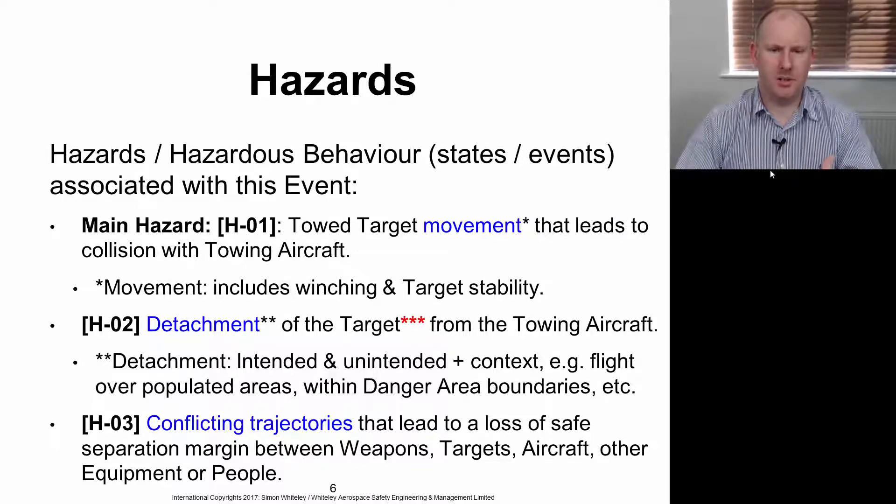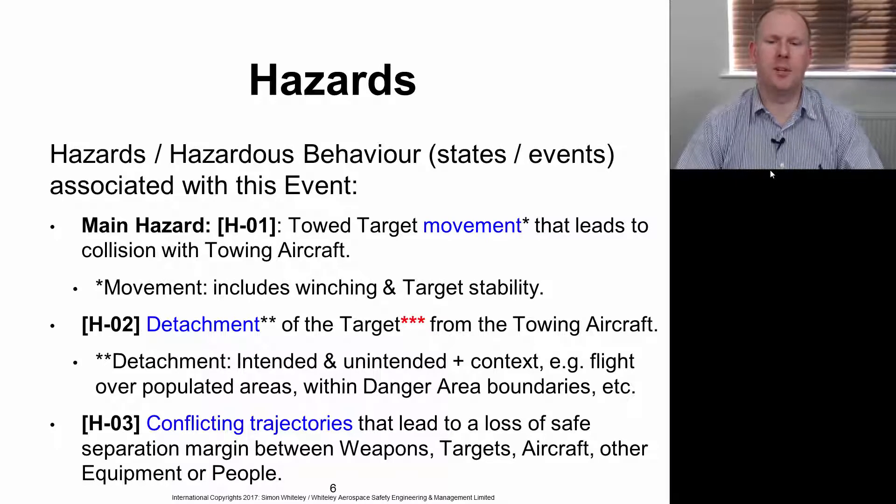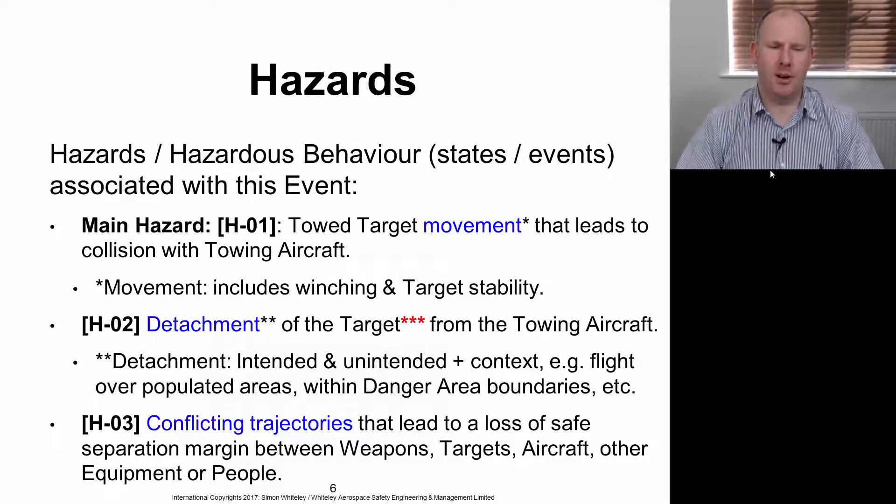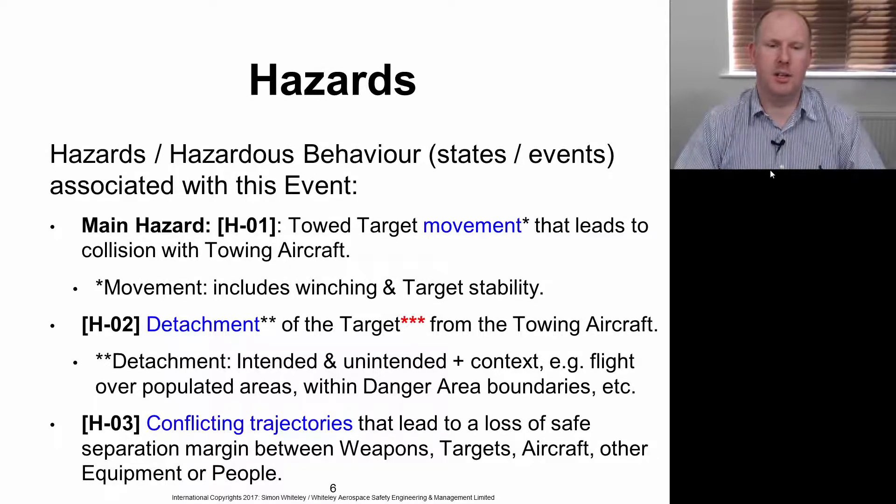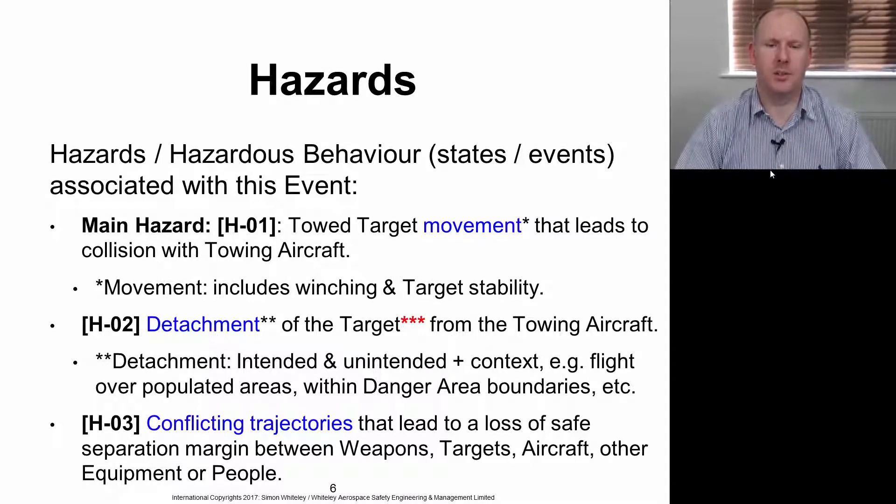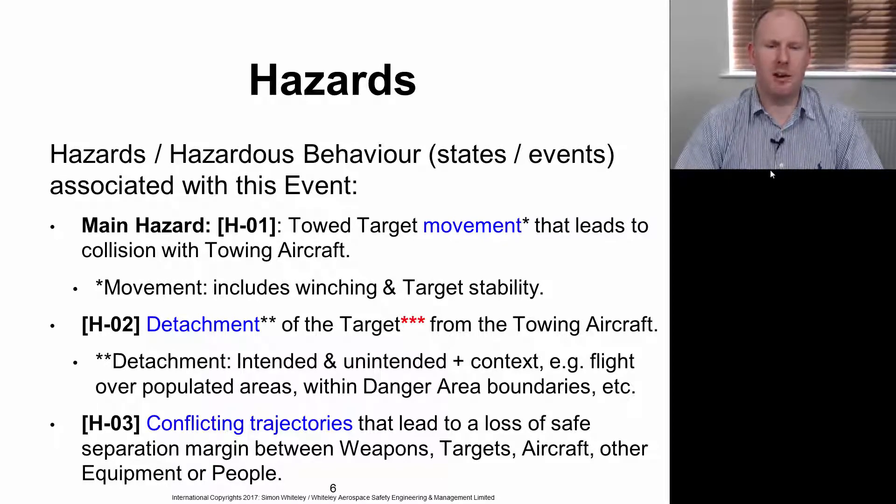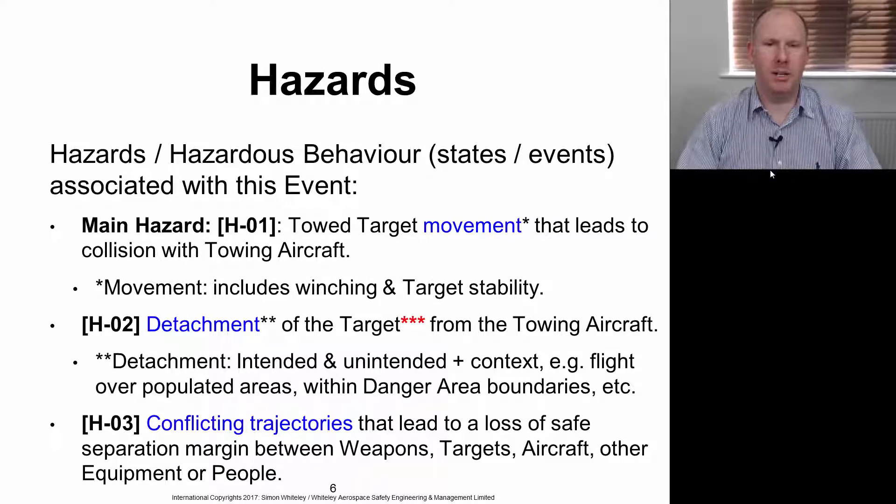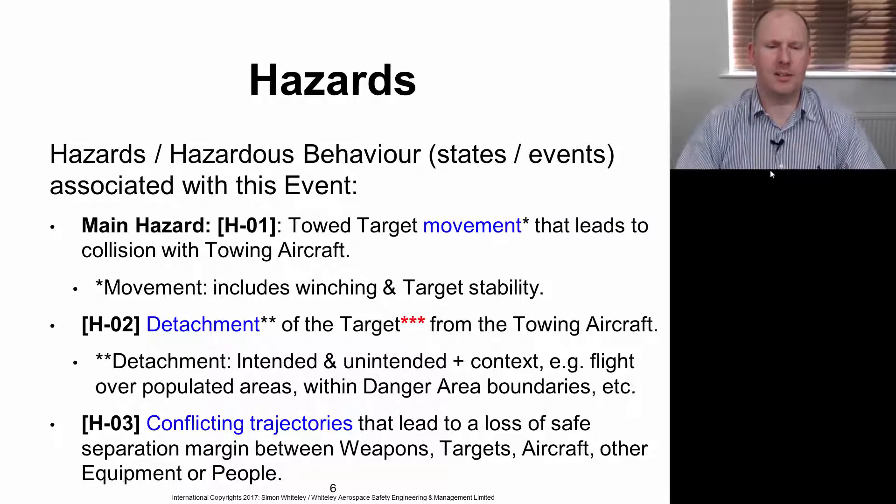And then Hazard 2, this is detachment of the target from the towing aircraft. Detachment includes both intended, whereby the crew may decide to cut the cable so it detaches, or it may be unintended. And obviously there's some context associated with that, for example, whether the aircraft is flying over populated areas or whether it's within danger area boundaries. The hazard will be less or more significant depending on that context.